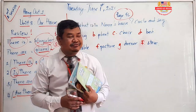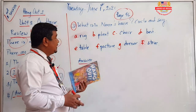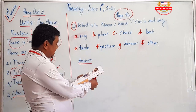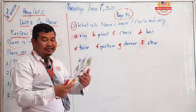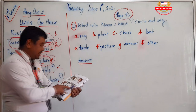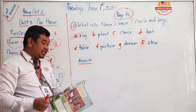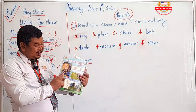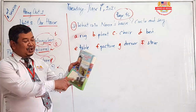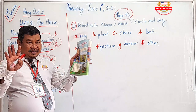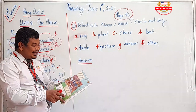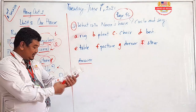Now open your book to page 96. We have a question related to Narom's house. Do you remember Narom's house? This is Narom — it is his house, a special house called a 'ger.' There are a lot of things in Narom's house, and you need to answer what is in his house.